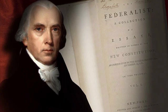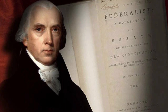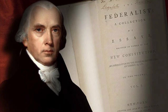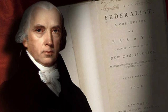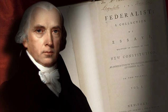First, let's set the stage. Federalist 10 was written in 1787 as part of the Federalist Papers, a collection of essays aimed at promoting the ratification of the United States Constitution. James Madison, one of the founding fathers, penned this particular piece. In Federalist 10, Madison famously wrote, 'Liberty is to faction what air is to fire.' What does he mean by this, and why is it relevant?